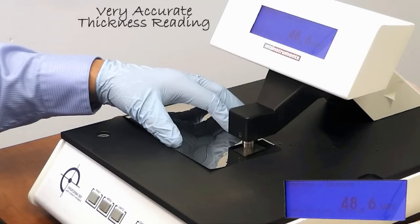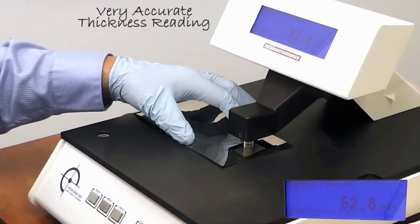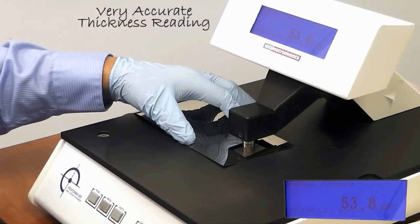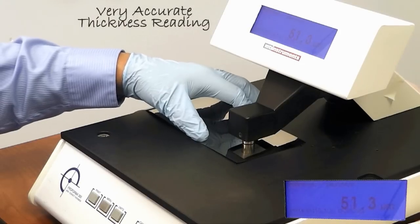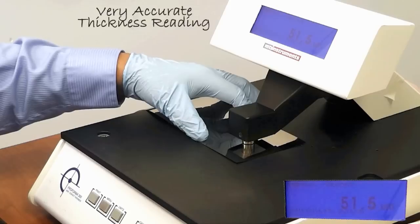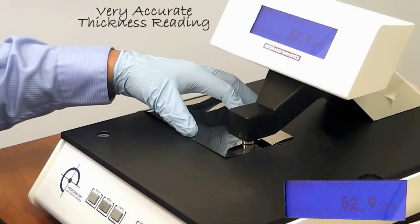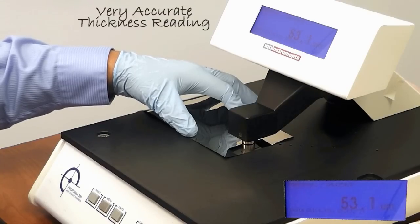Now what we're going to get is readings every time we move it to a different location. We're reading 48.6 microns. Let's move it over here. 52.7, 53. So we can check a number of points. There's 51.5. We move to the edge, 52.9.